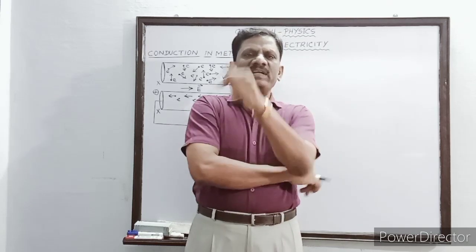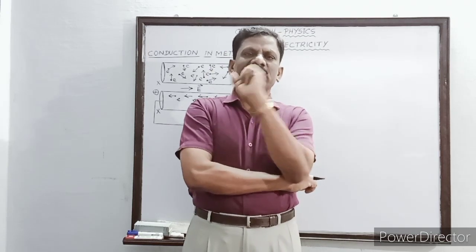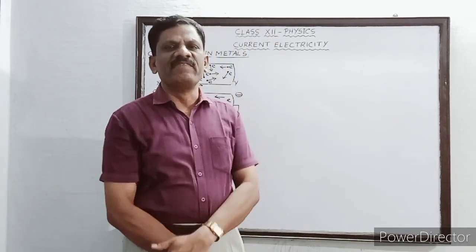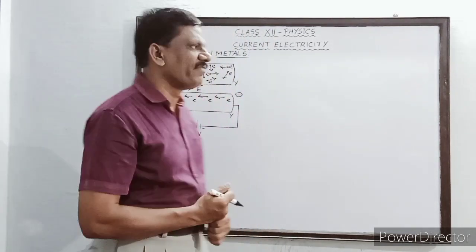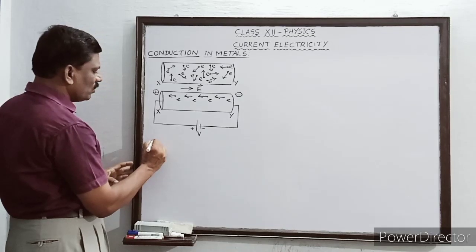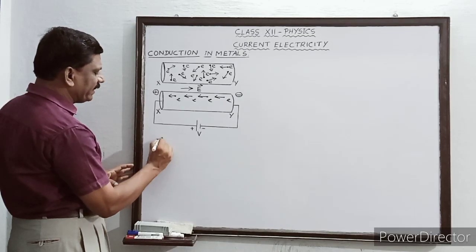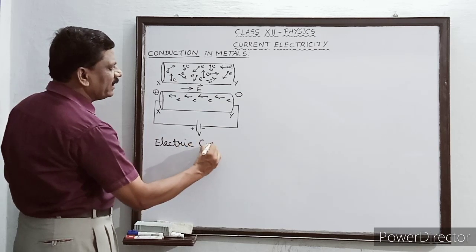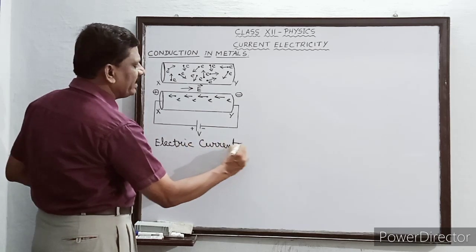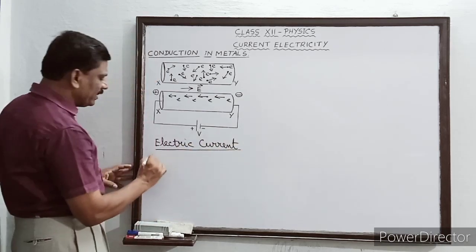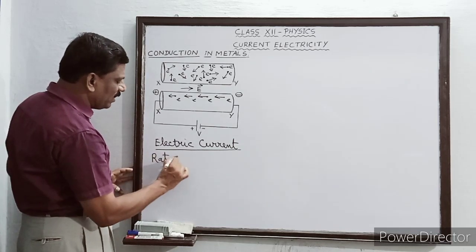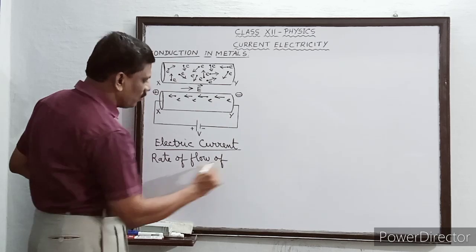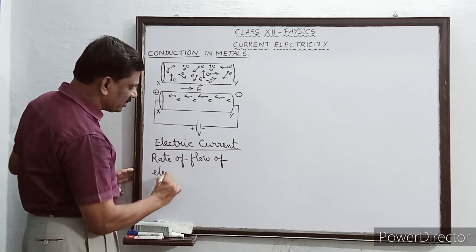In general, how do we define electric current? In earlier classes we have seen that electric current is defined as the rate of flow of electric charges.